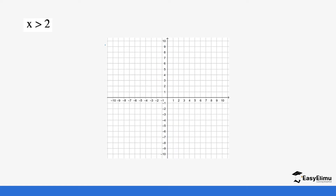Now this one is x > 2, but notice we do not have the equal sign. We still go to where 2 is on the x-axis, but instead of a bold line we draw a dotted line, which tells us that 2 is not part of the values of x. The values of x are all values greater than 2, so we shade the region behind or less than 2. Remember, 2 is also not part of the values.